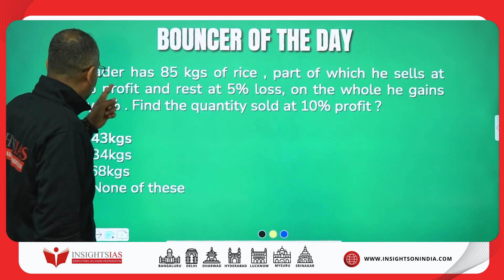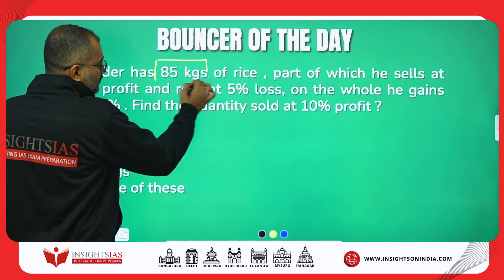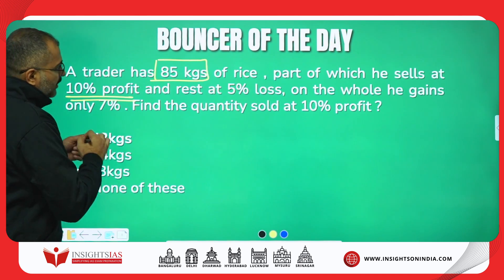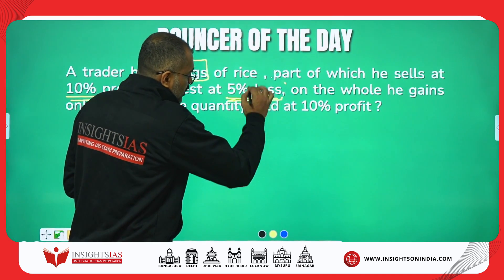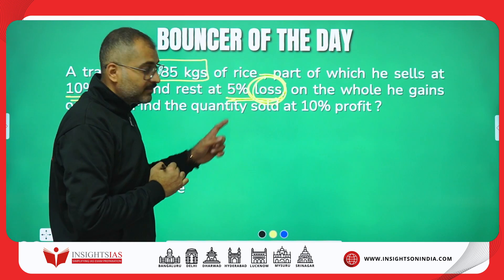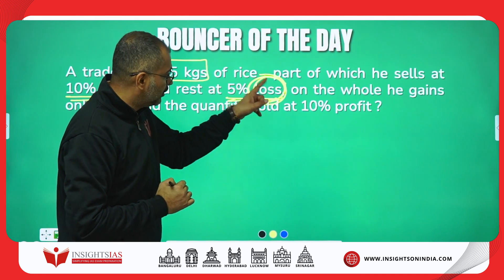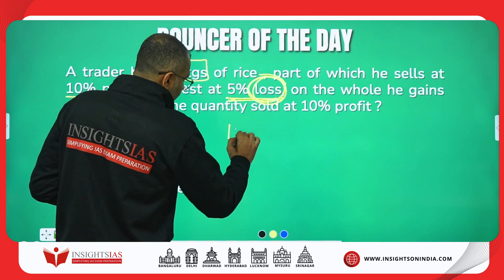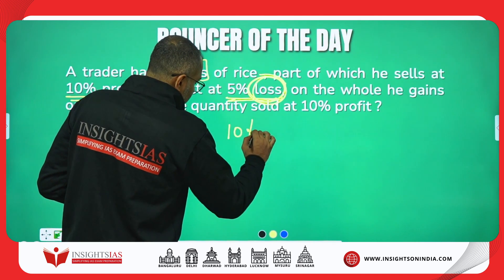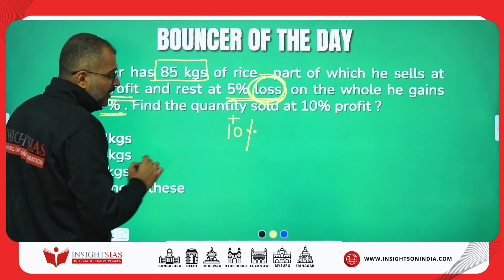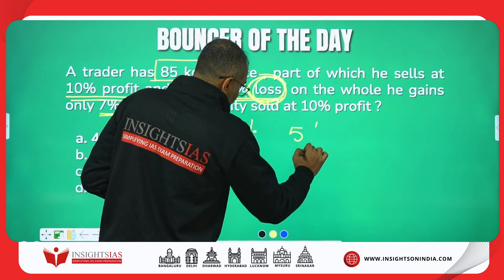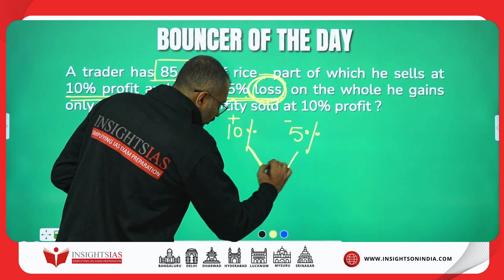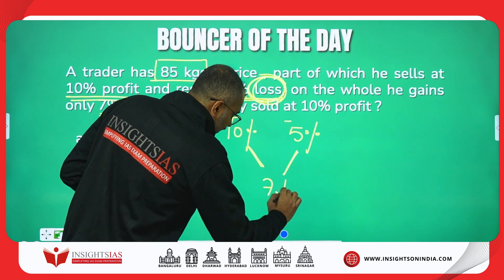See, in a very simple way. A trader has 85 kgs of rice, part of which he sells at 10% profit and the rest at 5% loss. On the whole he gains 7%. One way is 10% profit — I'll put that as plus 10. 5% loss — I'll put this as minus 5. Putting the allegation, the overall result is 7% profit.